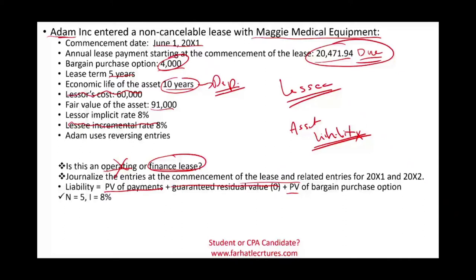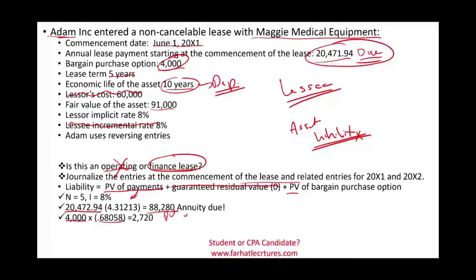We're going to use n = 5 and i = 8% since the lease term is five years. We first compute the present value of the rental payments: the annuity due factor is 4.31213, giving a present value of $88,280. Then we find the present value of the bargain purchase option: $4,000 times the present value factor of one period gives approximately $2,720. There may be slight rounding differences in your textbook, but the total present value — and therefore the lease liability — is $91,000.